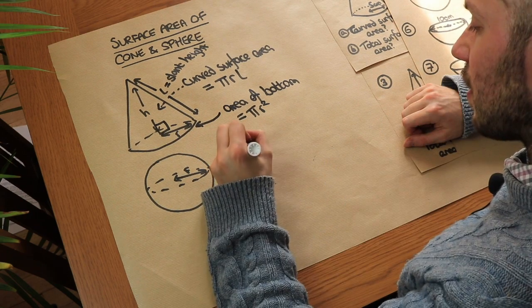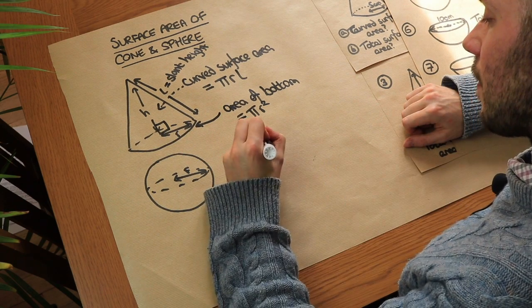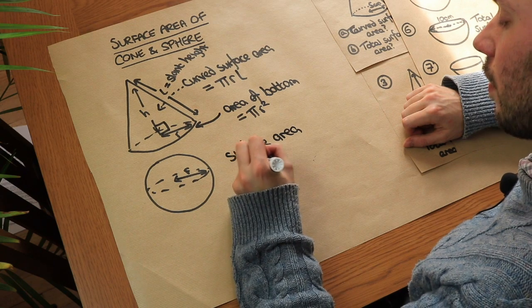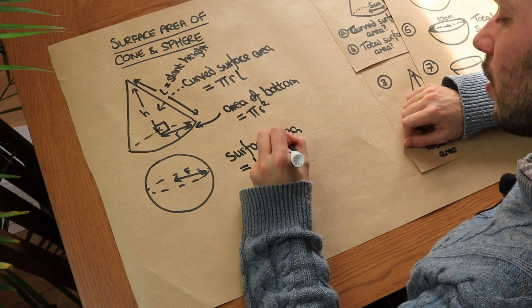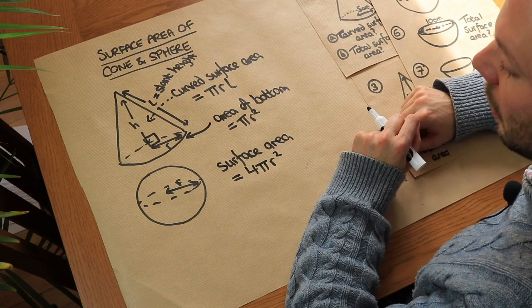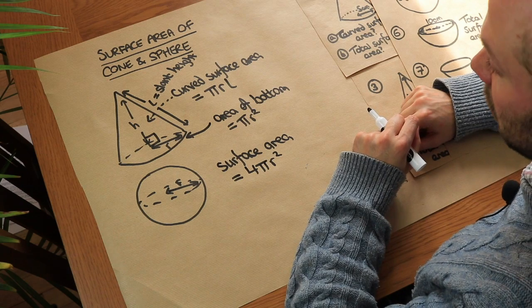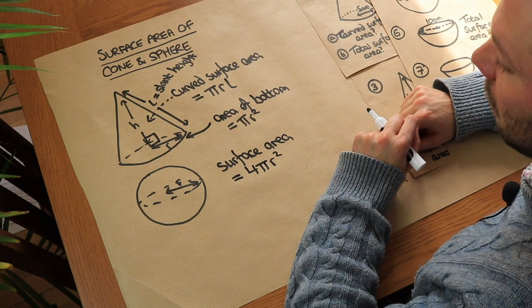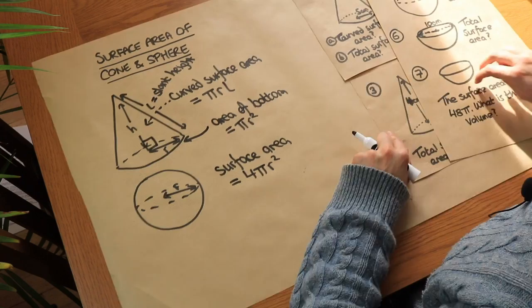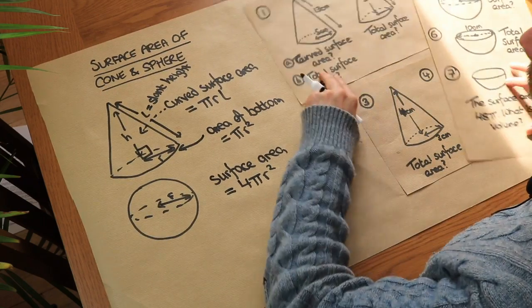The surface area of a sphere is equal to 4 pi r squared, and that is given to you in the GCSE formula booklet if you're doing GCSE. Now let's use these formulas to solve some problems.